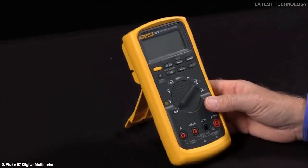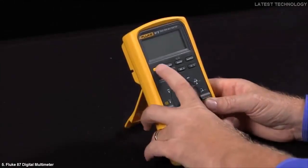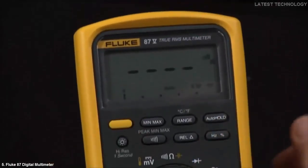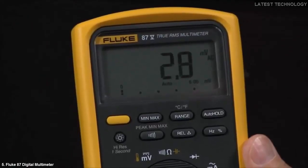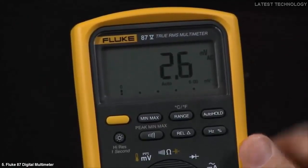For example, if I want to disable the automatic power off, I would hold in the yellow button and turn it on. This will disable so the meter will stay on, otherwise it would automatically power itself off after 30 minutes.